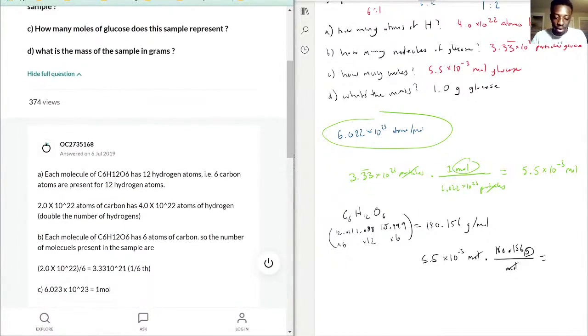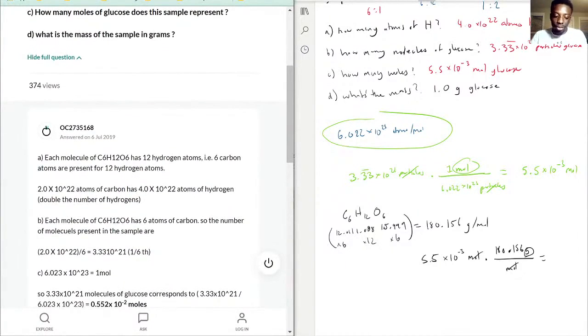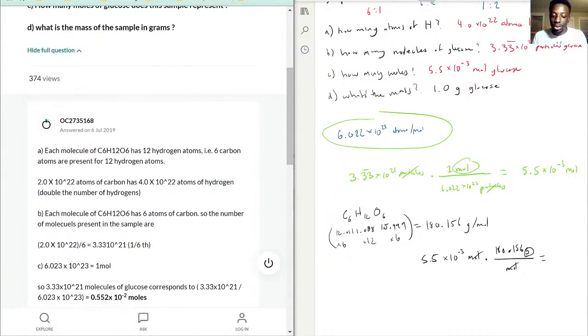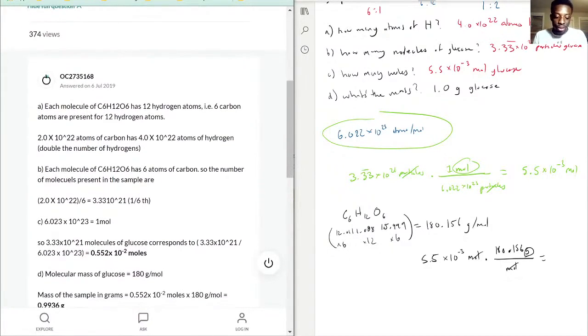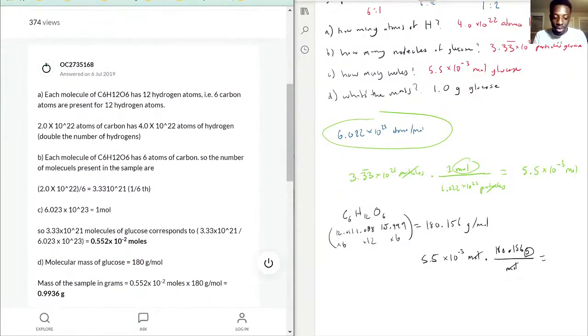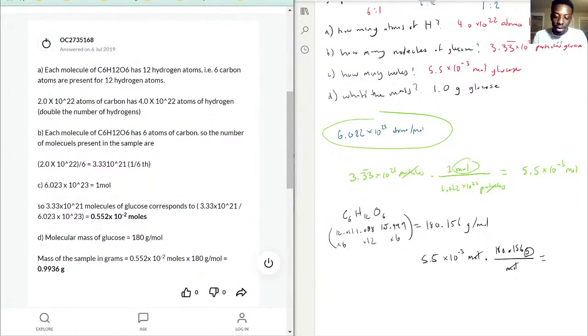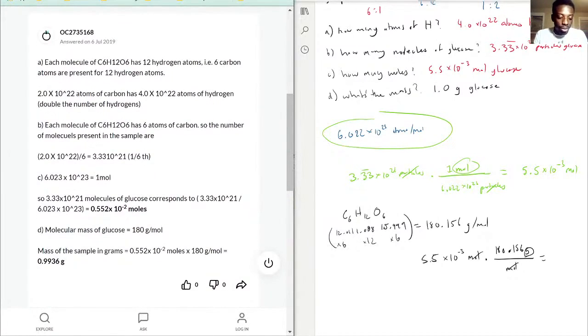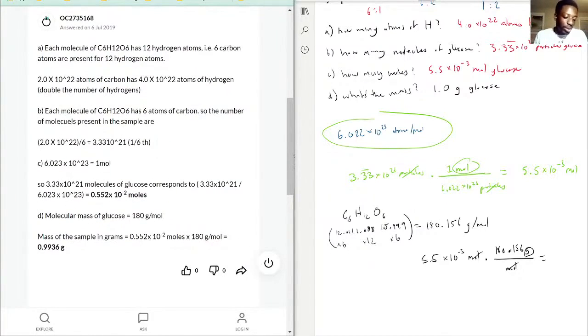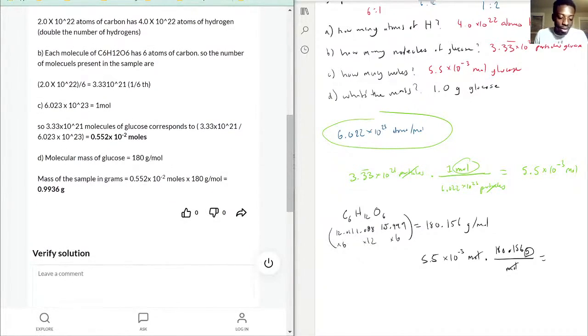Let's see how they did. Yep, 1 to 2 ratio, so they do get the 4.0×10^22 atoms of hydrogen. And now 1 to 6 ratio—they definitely got the 3.3×10^21. Perfect. And now they got our 5.5. Interesting that they put 0.5—it's the same thing, they just didn't want to move the decimal in one more place. And then the last part, they have 0.9936. I just rounded up because I only had two significant digits. So that's why it's the 1.0 grams. But this is correct.